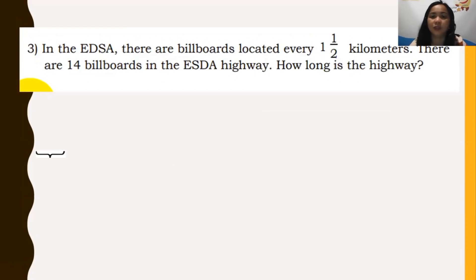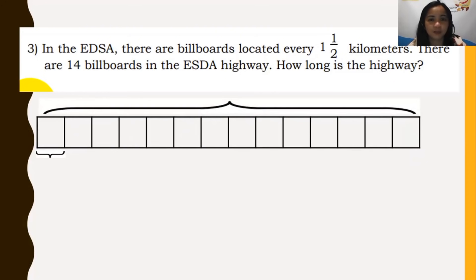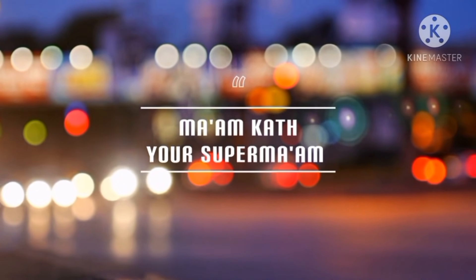Number 3: In EDSA, there are billboards located every 1/7 kilometer along the highway. If there are 14 billboards, use the block model to determine the total distance. We'll be right back.